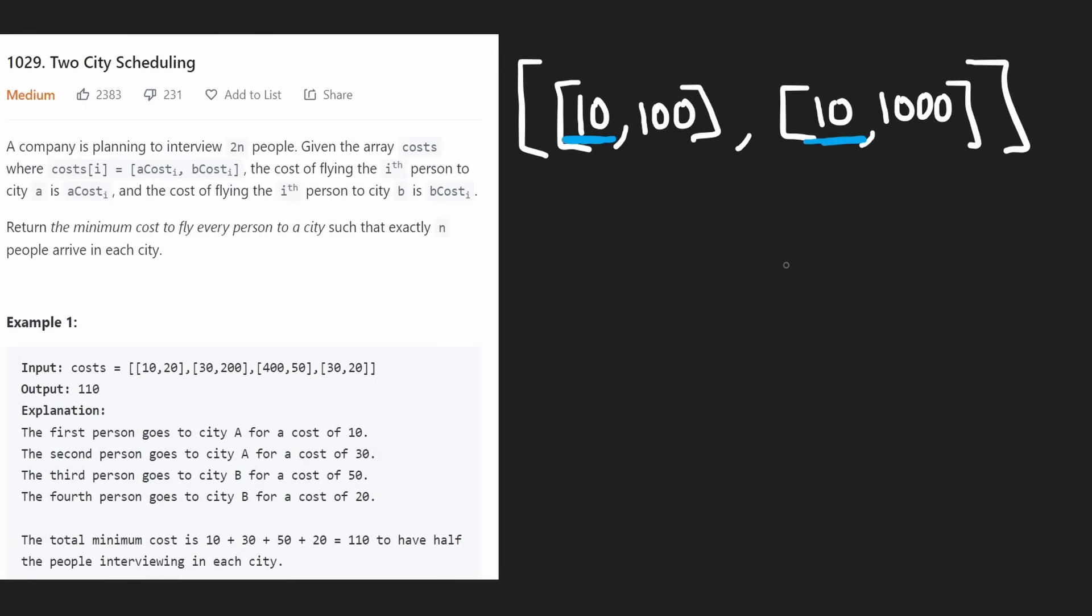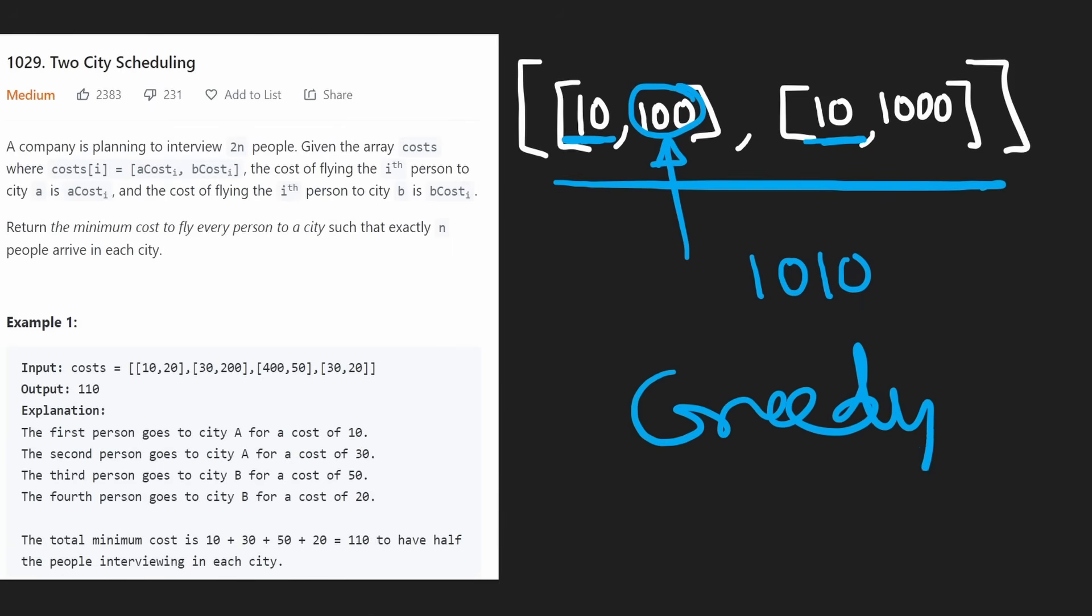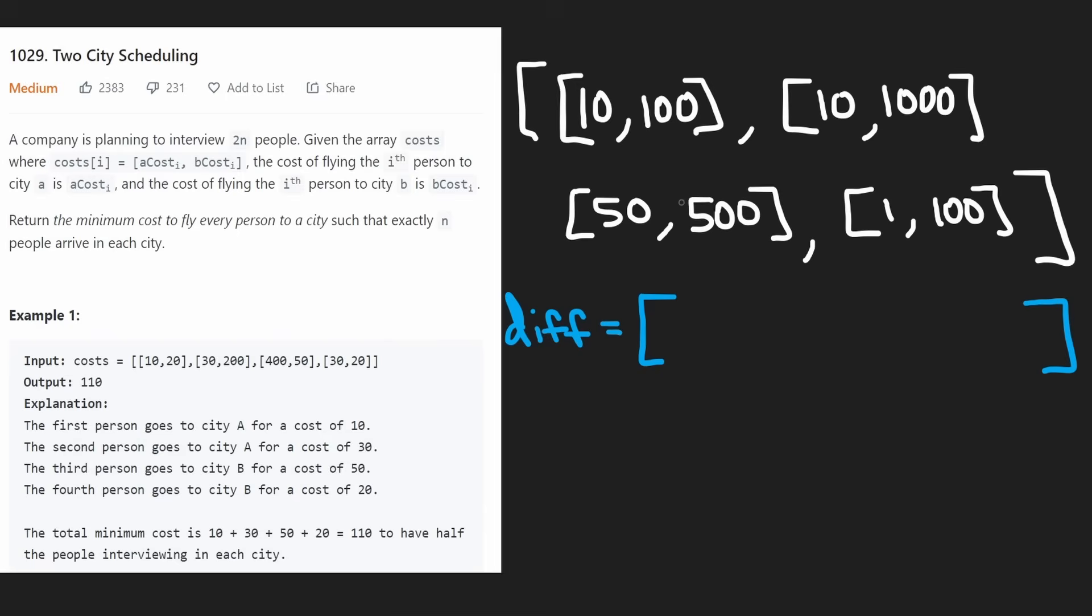Which one would we rather send to city B? Probably this person, because yes, it costs 100, but at least we save that 1000. That's really the important part - the total cost will be 110. If we do it the opposite way, the total cost will be 1010. Going down this train of thought, we can come up with a greedy solution. So the question is, how can we quantify how important it is to send this person to city A rather than city B? What's more important, sending this person to city A or sending this person to city A?